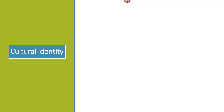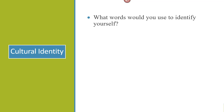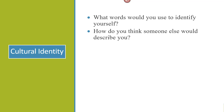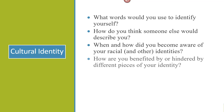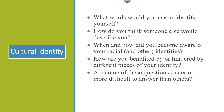To improve understanding about cultural identity, let's examine a subject that you are an expert in — yourself. Please take just a few moments to really consider the following questions. You can even write your answers down in a journal or discuss within a group. First, what words would you use to identify yourself? How do you think someone else would describe you? When and how did you become aware of your racial and other identities? How do you benefit from, or how are you hindered by, different pieces of your identity? Are some of these questions easier or more difficult to answer than others, and why? Thinking about these questions helps you understand yourself and your cultural identity. Reflecting on your own identity and what you do or don't know about other cultural groups can improve your skill set.